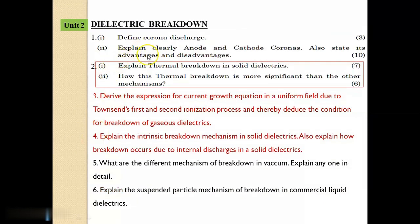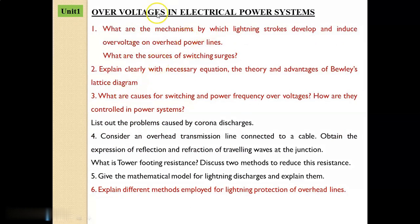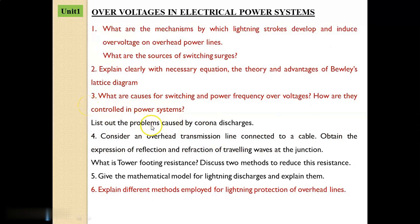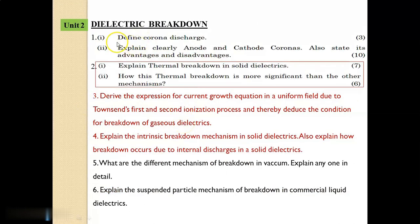Unit 2 is Dielectric Breakdown. All questions have subdivisions. Question No. 1: Define corona discharge. Explain clearly anode and cathode coronas, and also state their advantages and disadvantages. Note: corona discharge comes under the second unit, not Unit 1. The marks split up is 3 marks for the definition and 10 marks for the explanation. This was asked in a previous Anna University question paper.